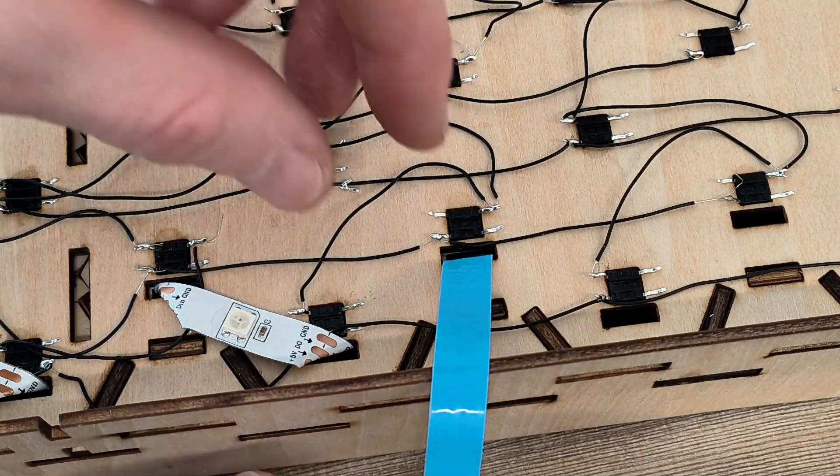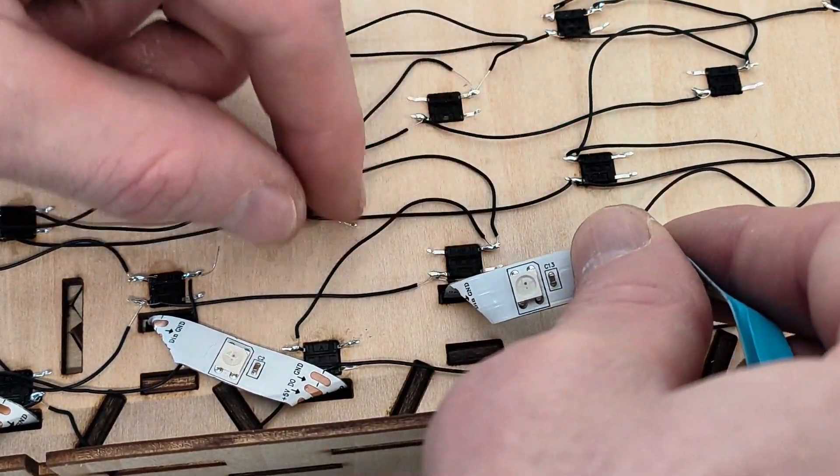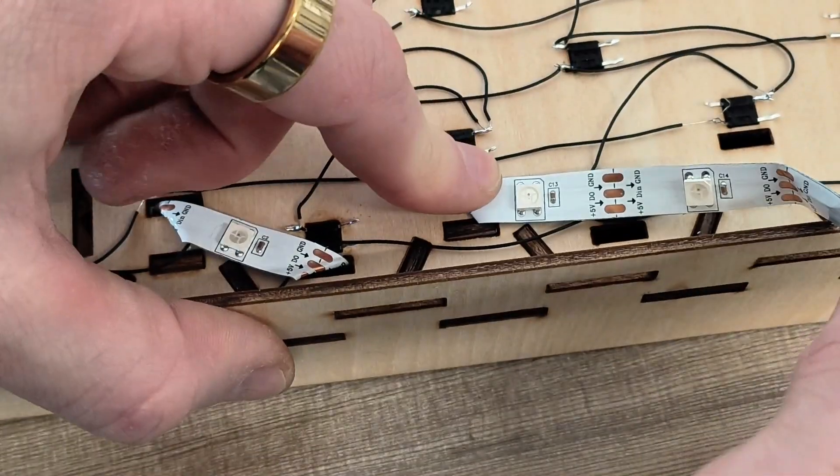And it's quite easy. You just bend it in a 45 degree angle when it comes out. And so the LED is facing up.